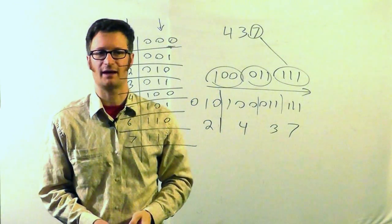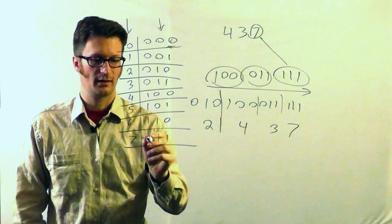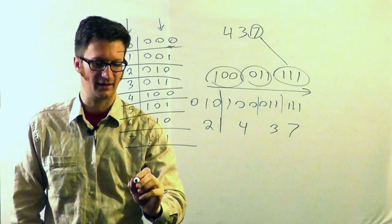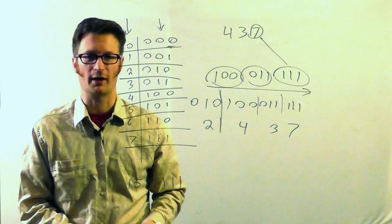To do hexadecimal, it's the exact same thing, except that instead of having 3 digits, you have to have 4 because the value 15 is represented in binary by 1111.